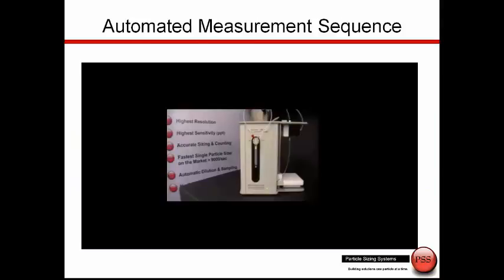In this short video, we see the AccuSizer SIS in action. The sample tube is placed into the sample. Once we hit go, the syringe then aspirates the sample up through the sensor and takes the number of poles that has been programmed for the defined measurement.